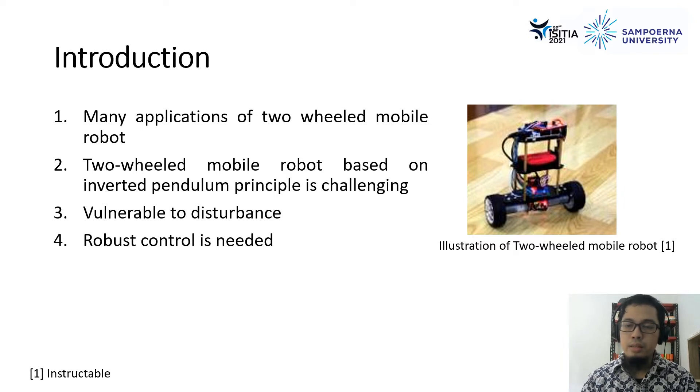Besides that, two-wheeled mobile robot is vulnerable to disturbance. If we give a disturbance, it will go to collapse and failure and unable to hold its position. That is why a robust controller is needed to develop.